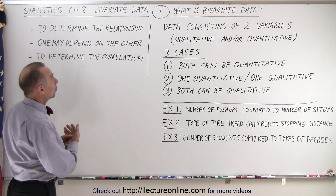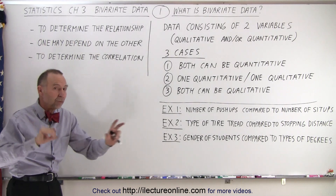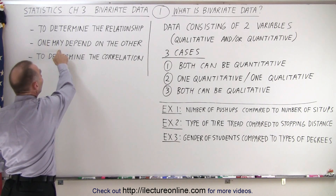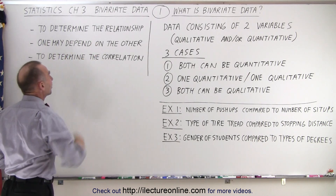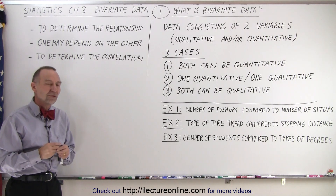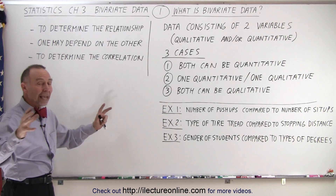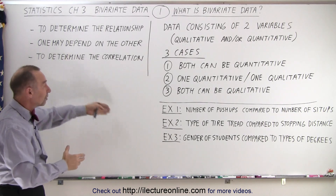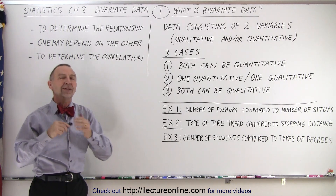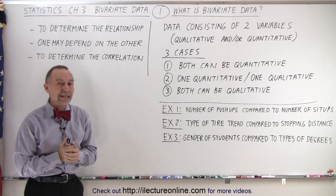Now, what kinds of things do we want to do with that data? For example, we want to determine the relationship between the two variables. We may want to find the dependency of one relative to the other, or we may want to find the correlation between the two types of data. That's why we look at two sets of data and compare them — and we can have both quantitative and qualitative data — and that's what we do with bivariate data.